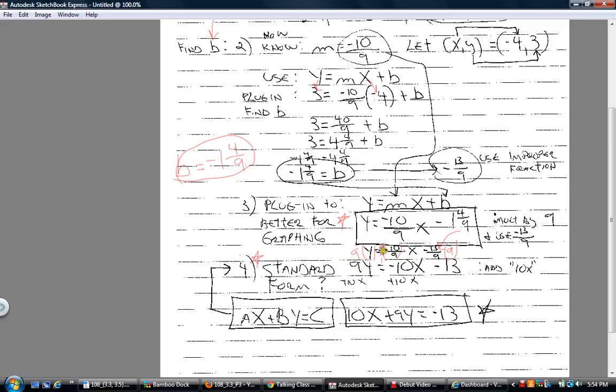Look what happens here. The 9 in the numerator and 9 in the denominator cancel out, and you're left with negative 10x. Again, 9 in the numerator, 9 divided by 1 is 9. 9 in the denominator, they cancel out, and you're left with minus 13. That's the key step. You want to multiply by the LCD. That's the key step.